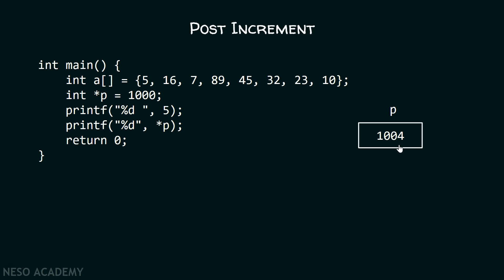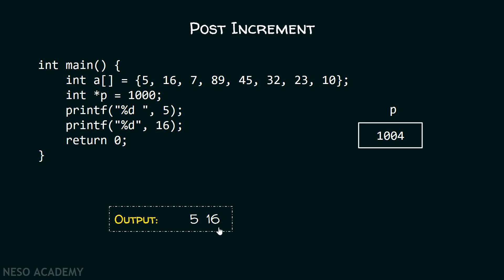I am also assuming that integer will take 4 bytes of memory location. Therefore, after increment the address will be 1004. Now, with the help of this printf function, I will simply print the value of star P. P contains the address 1004. Therefore, star 1004 means we will get this value which is 16. Hence, it will get replaced by 16. So, the final output is 5 and 16.